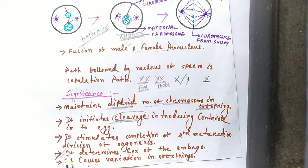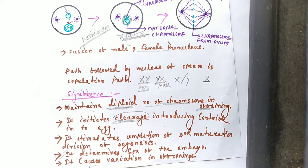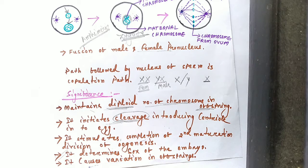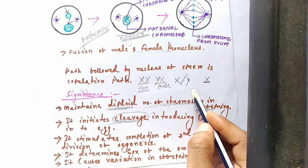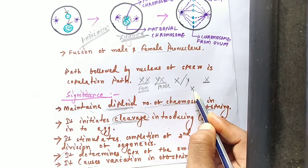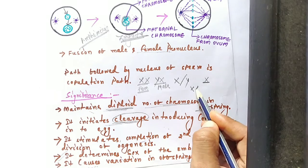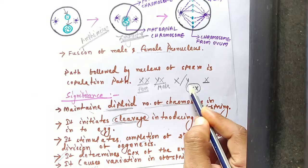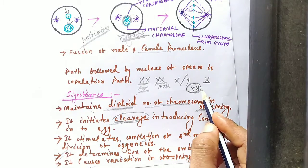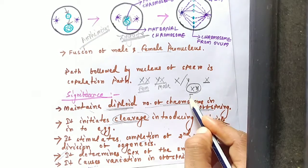The next significance is that fertilization determines the sex of the embryo. The sex of the offspring is determined at the time of fertilization. For example, if a sperm containing an X chromosome fuses with an ovum containing an X chromosome, the offspring will be female.